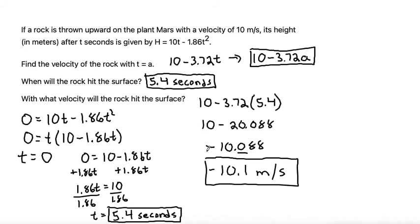And that's why this negative is showing up. It's basically saying that it's just a speed of 10.1 meters per second, but it's moving down towards the surface of Mars, which makes sense because it has to be moving towards the surface of Mars in order to hit Mars.